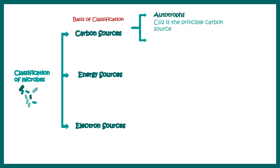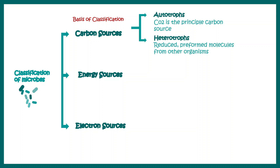One could be autotrophs, which use CO2 as the principal carbon source. The other could be heterotrophs, which use organic carbon as their source, such as reduced or preformed molecules from other organisms.